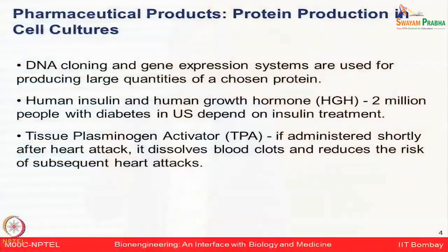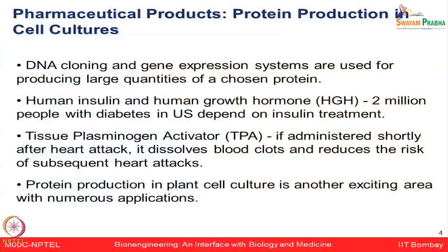Another protein is tissue plasminogen activator (TPA), required for people having a heart attack. If injected immediately after sensing symptoms, it helps dissolve blood clots and patients can be saved. This illustrates how useful these proteins are and why they must be produced in really large amounts. Many big pharmaceutical companies produce these proteins with strict quality control checks. Protein production in plant cell culture systems is also a progressing area in plant biotechnology.